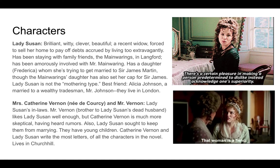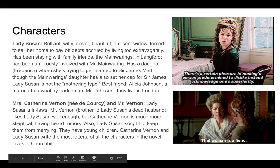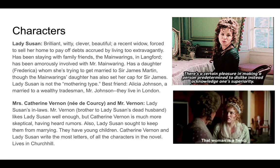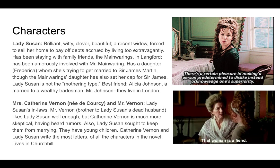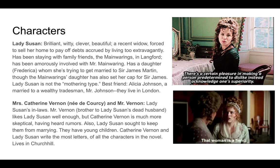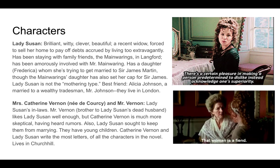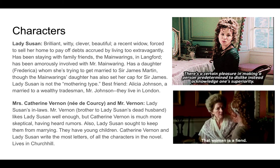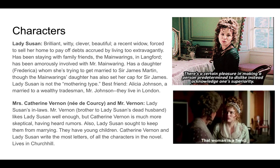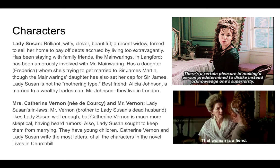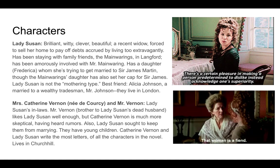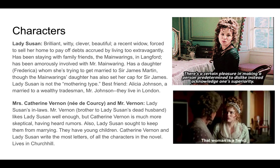Lady Susan is brilliant, witty, clever, and beautiful. She's a very recent widow, forced to sell her home to pay off debts accrued by living too extravagantly. She's been staying with family friends, the Manwarings, in a place called Langford. She has also been amorously involved with Mr. Manwaring. She has a daughter named Frederica, and she's trying to get Frederica married to a guy named Sir James Martin, even though the Manwaring's daughter has also set her cap for Sir James. Lady Susan is emphatically not the mothering type — she's very sociable, she's a flirt, she likes to be out and about. Her best friend is Alicia Johnson, who is married to a wealthy tradesman, and they both live in London.